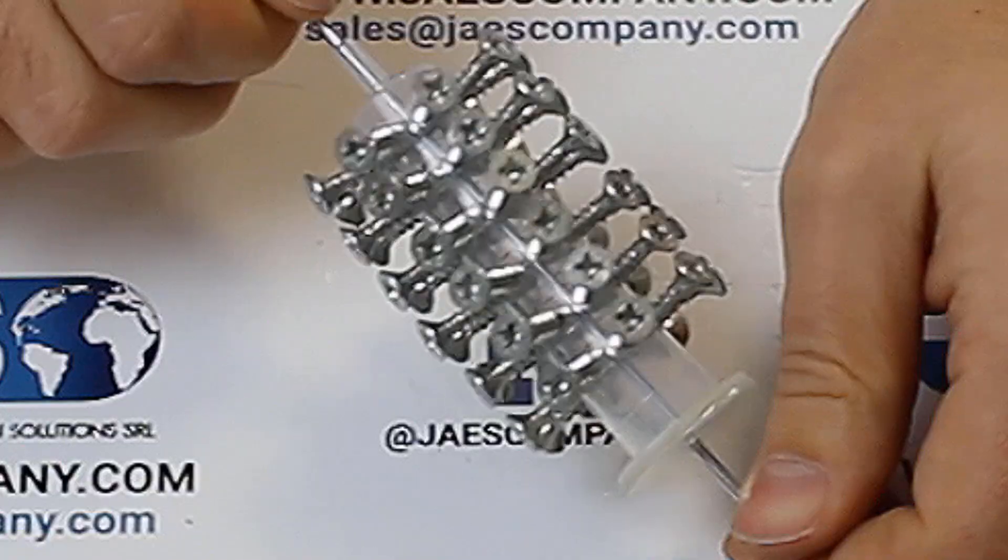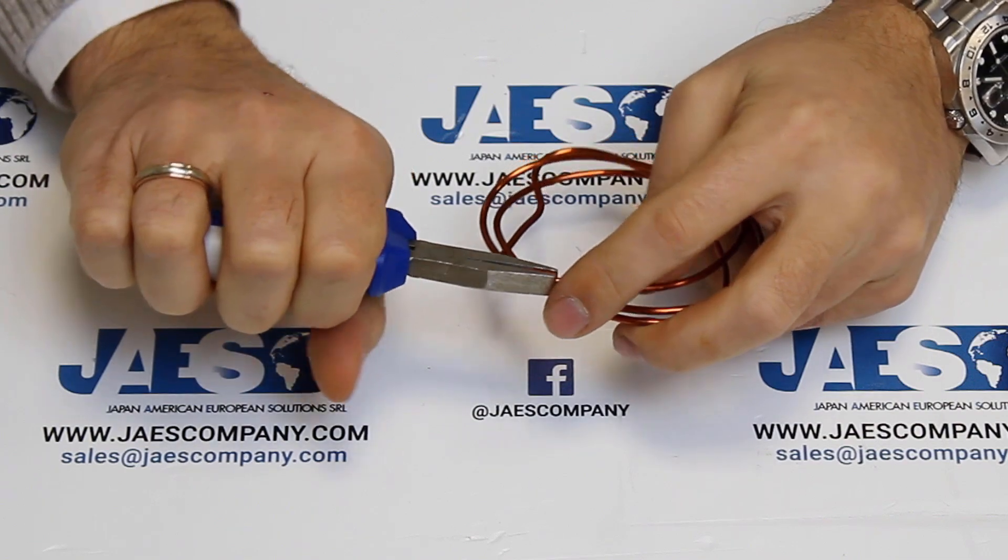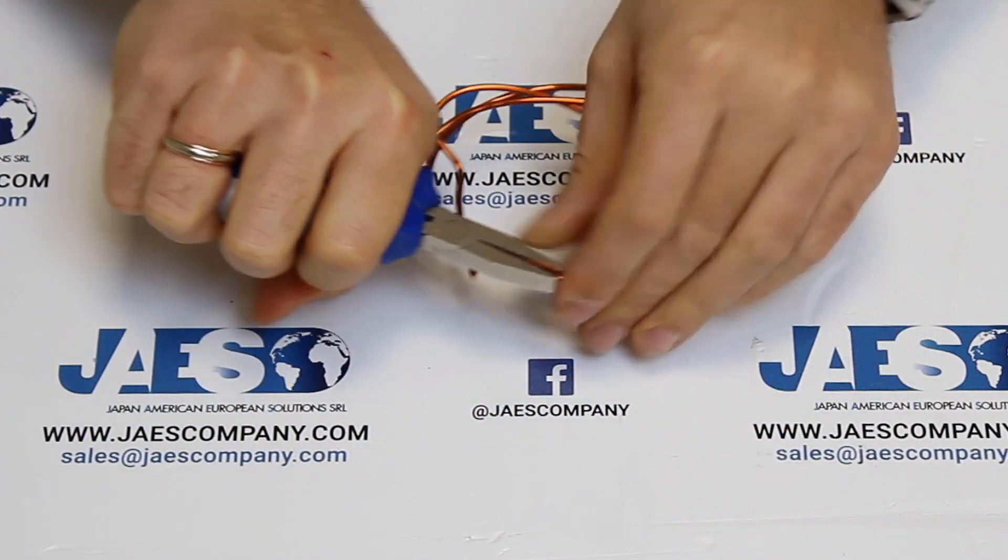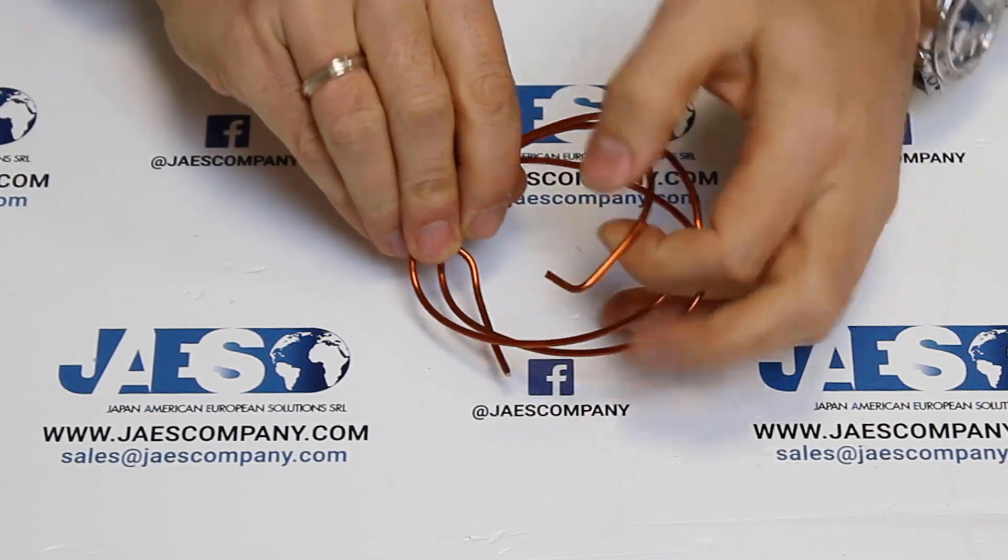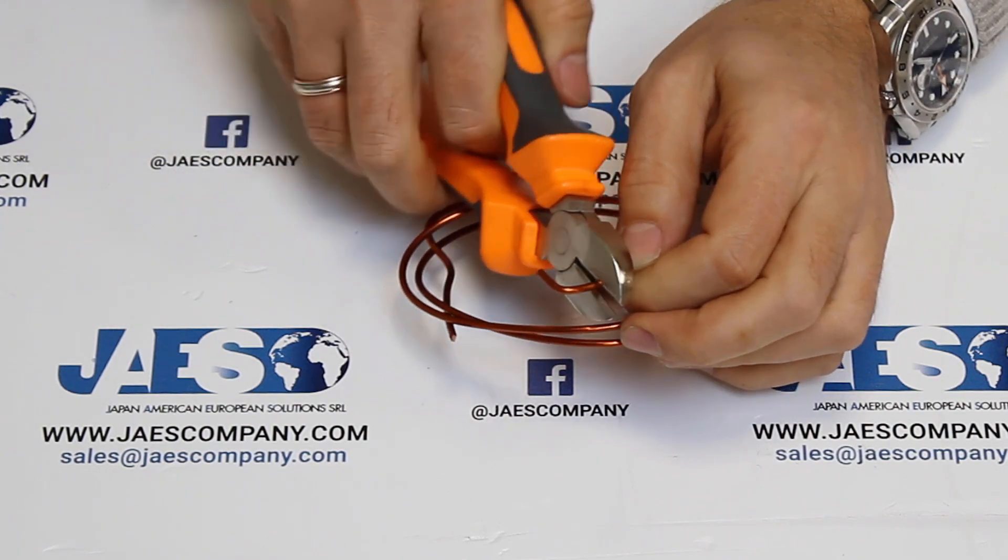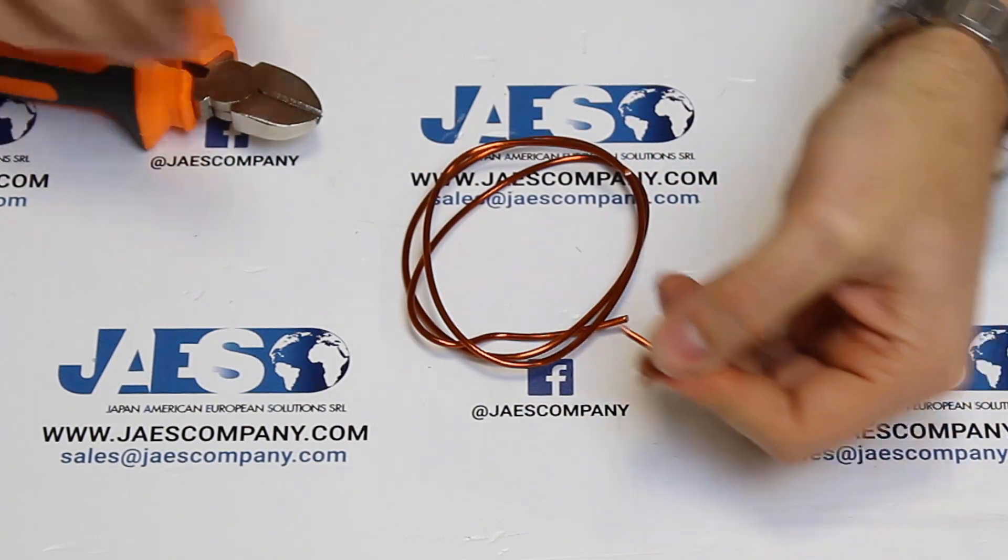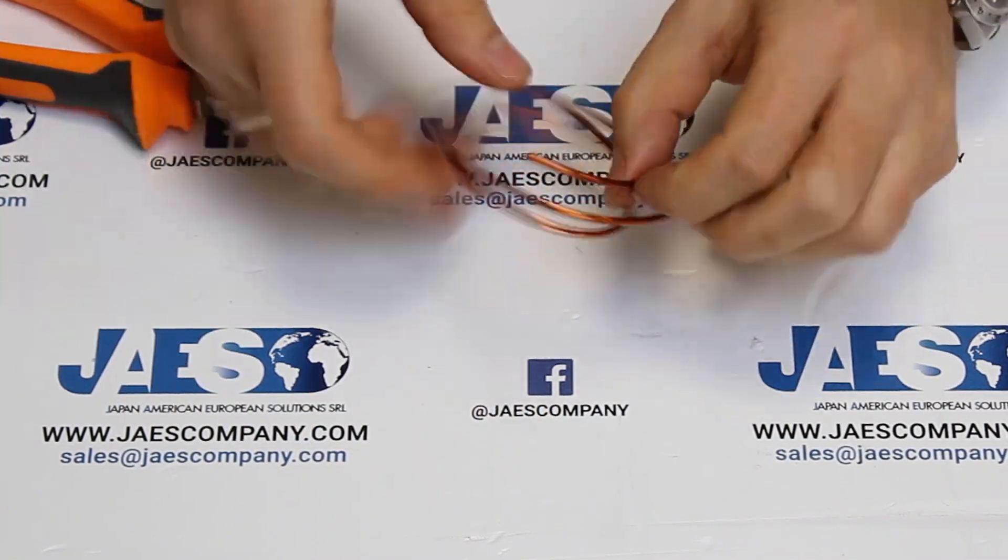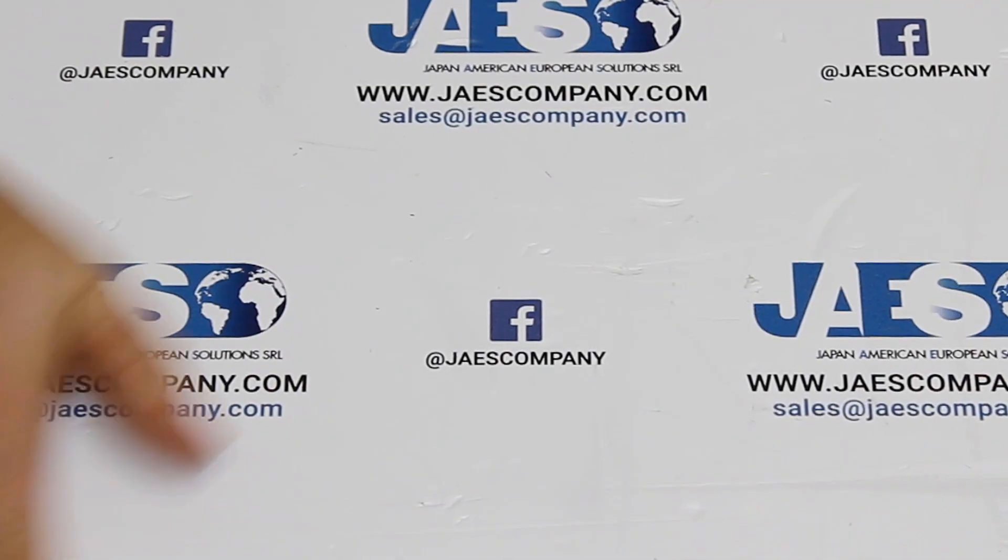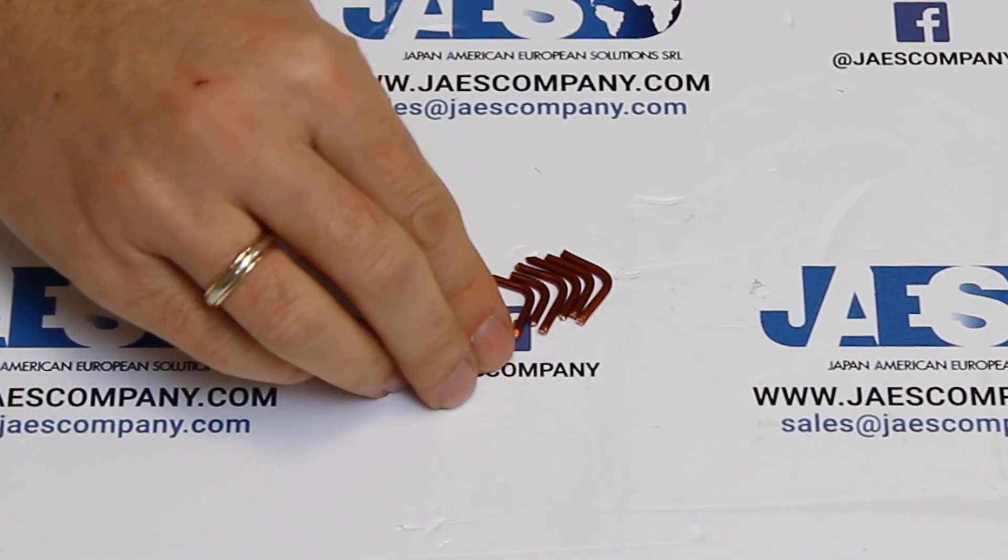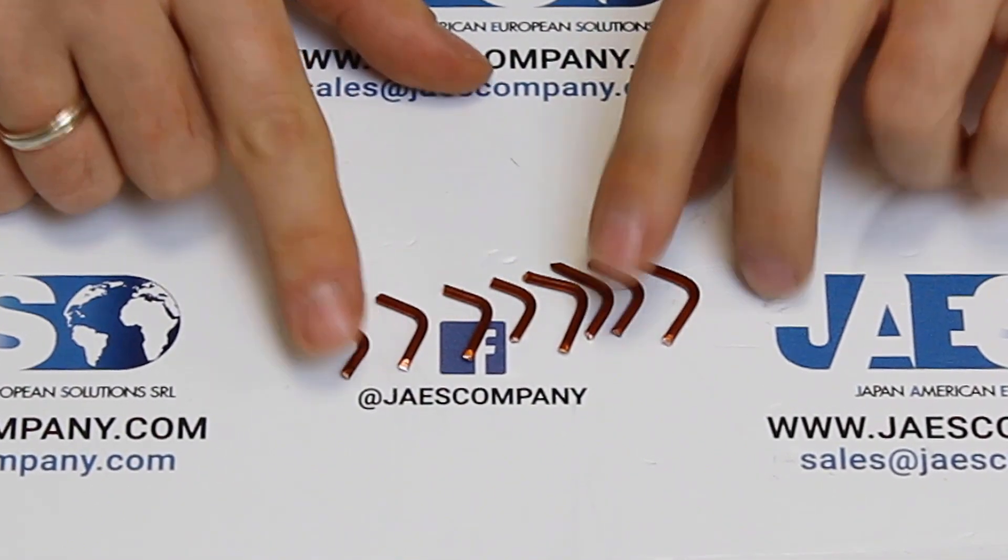Now that we set up all the screws, let's take our 1.5mm copper wire to shape small pieces of it in this way. We have to cut and shape 8 small pieces of copper.